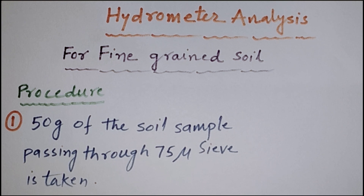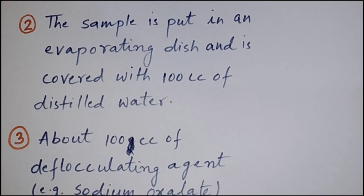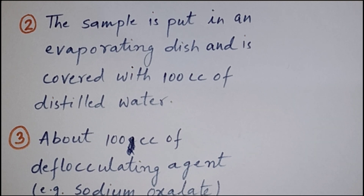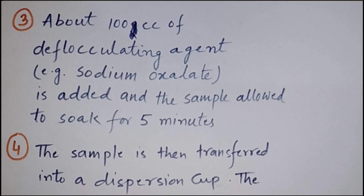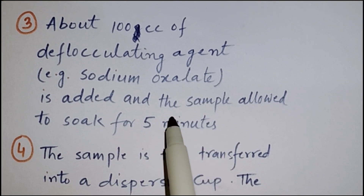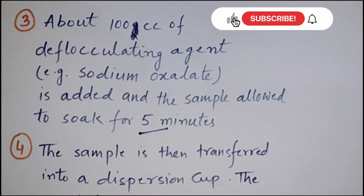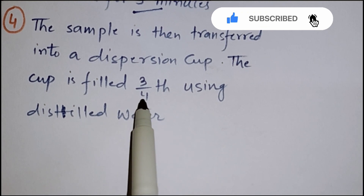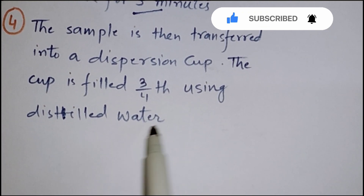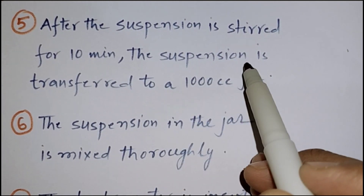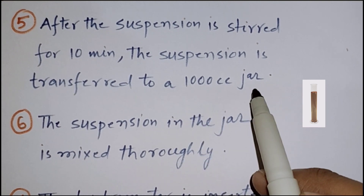First of all, we will take 50 grams of the soil sample passing through 75 microns. Then the sample is put in an evaporating dish and is covered with 100 cc of distilled water. After that, about 100 cc of defloculating agent, for example sodium oxalate, is added and the sample is allowed to soak for 10 minutes. The sample is then transferred into a dispersion cup, and the cup is filled three-fourths using distilled water.